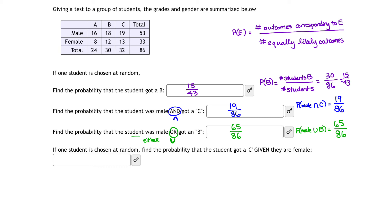The last problem says: if one student is chosen at random, find the probability that the student got a C given they are female. This is called a conditional probability, because we have an extra condition. When you have a conditional probability, it's going to change your denominator. The number of equally likely students we're selecting from is given to be female, so the denominator must be the number of females, which is 33.